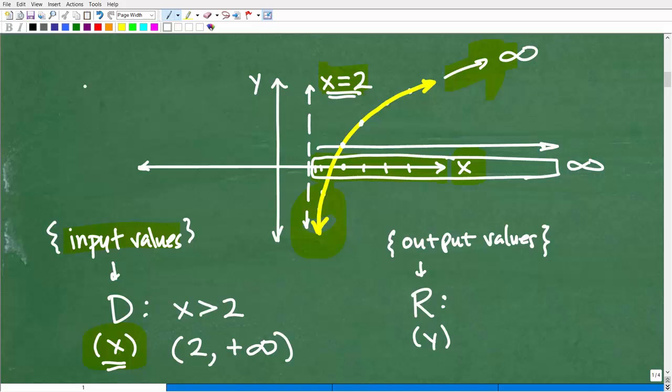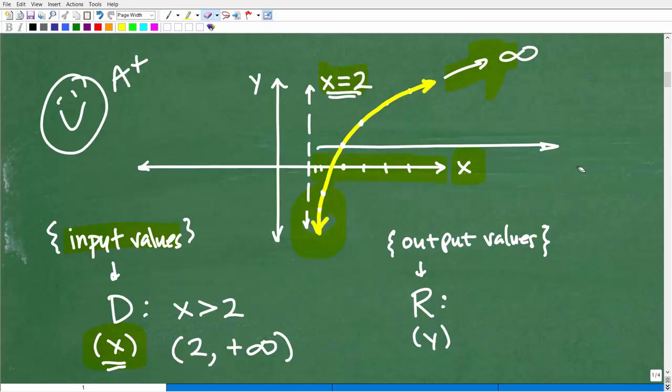So if you got that right, then I must give you a nice little happy face with an A plus, and we'll hold off on any extra stars and 100% here because we haven't talked yet about the range. And the range, we're basically going to do the same thing, but now we're going to be focused in on the y-axis. Okay. So how much of this graph is kind of spanning along the y-axis?